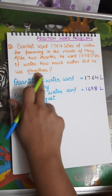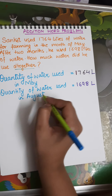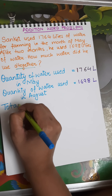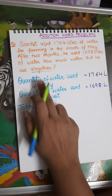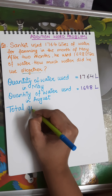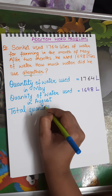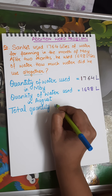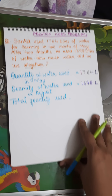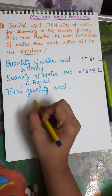Since the question asks for 'all together,' I have to find the sum. So the third statement — which is my answer statement — is: total quantity used. That's it.